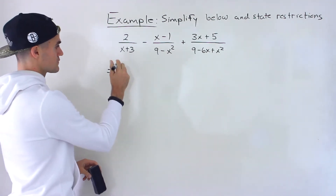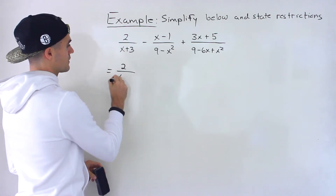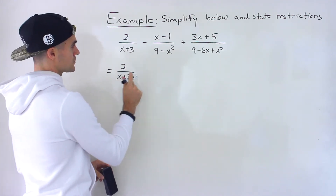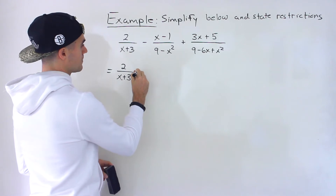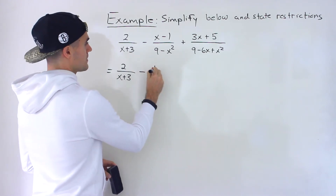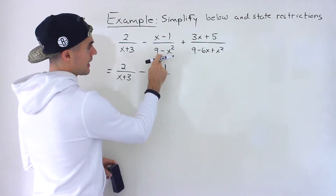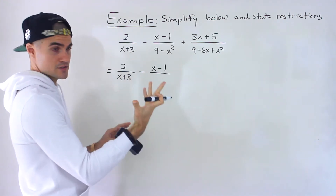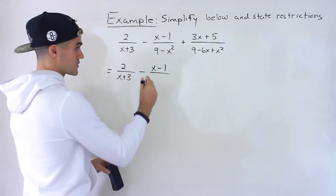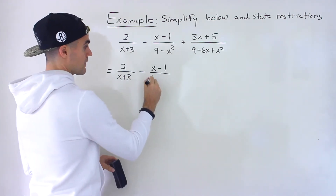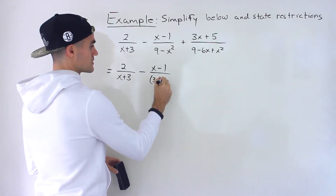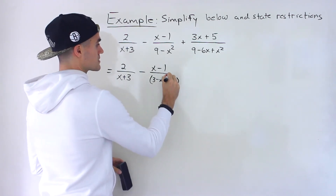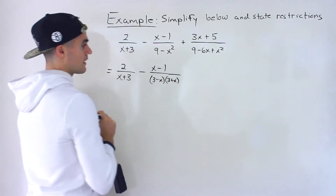In this first expression, you can't really factor anything. The 2 and the x plus 3 can't factor. The x minus 1 you can't factor, but notice the 9 minus x squared — that's a difference of squares. So that factors into 3 minus x and then 3 plus x.